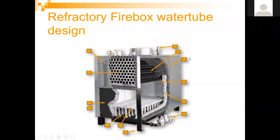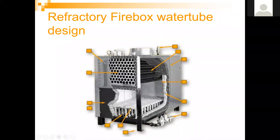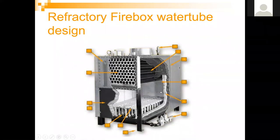This is an older design — Ajax used to make these as a factory firebox water tube boiler, but stopped making them years ago. It was a water tube boiler using straight tubes, nice from a service perspective because the straight tubes were easily replaced and serviced. The downside was always large cast refractory walls surrounding the furnace, resulting in radiation losses into the room. Those cast refractory walls could also fail and need replacement over time.